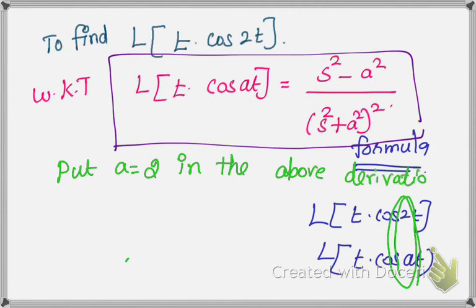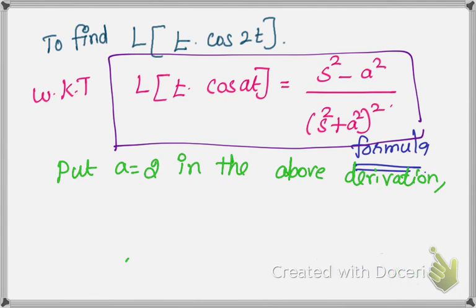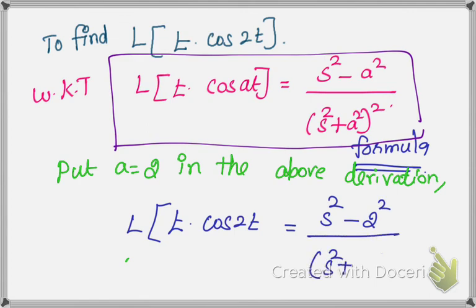in the above derivation. We get L{t·cos 2t} equal to s² minus a². A² is 2², over s² plus a², again a². So 2², the whole square. So next in the above derivation, s² is same, no change. So s² is s² only. Next term 2². 2² is what? 4.